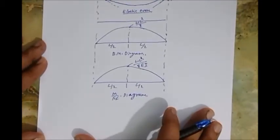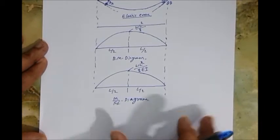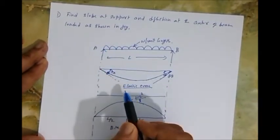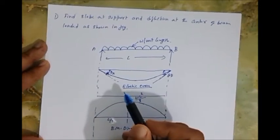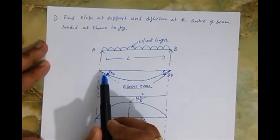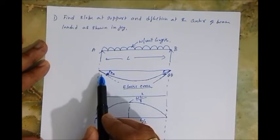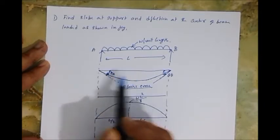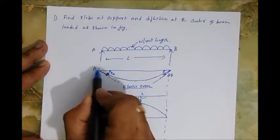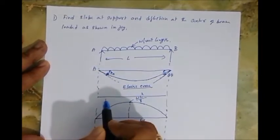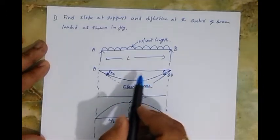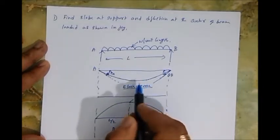Now let's find the slope at the support. As per Theorem 1, the slope at support A equals the area of the M/EI diagram between two points. I need a second reference point. Since this is a simply supported and symmetrical beam, I'll choose point C — the center of the beam — as my second reference point.